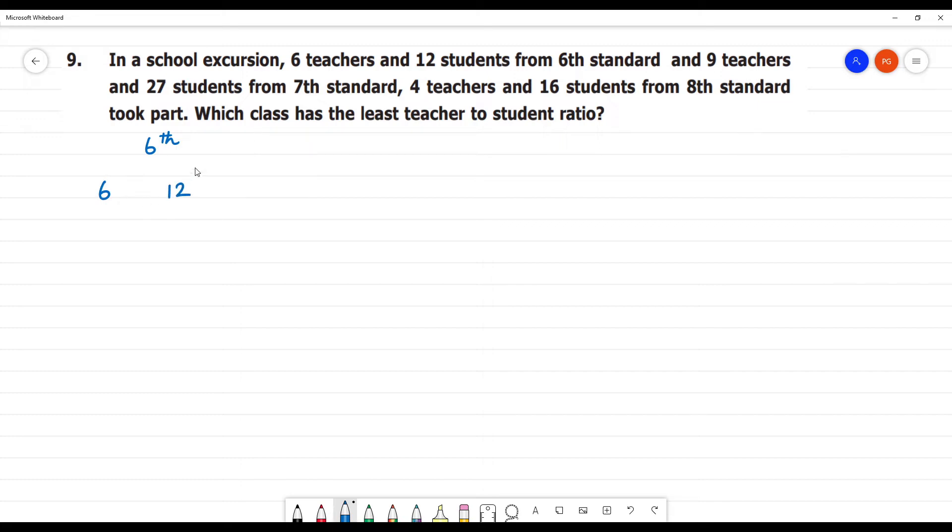This ratio is 7th standard. In the 7th standard, we have teachers and students. In the 7th standard, we have 27 students, 9 teachers.